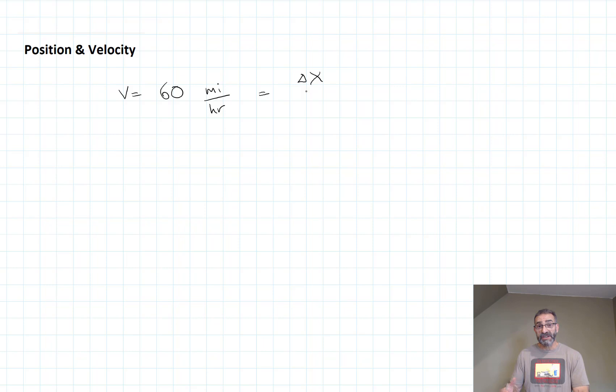A change in position or a displacement - a distance in some time interval: 60 miles in one hour. If we use calculus, we can get the instantaneous velocity by using derivatives, the derivative of our position function with respect to time.